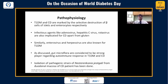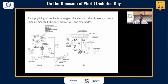Pathophysiologically, in type 1 diabetes and celiac, there is selective destruction of beta cells and enterocytes respectively. Infectious agents like adenovirus, hepatitis C, and rotavirus have also been implicated for celiac, apart from the commonly implicated culprit, gluten. Similarly, enterovirus and herpesvirus are also known triggers for type 1 diabetes. We have already talked about gut microflora, and isolation of pathogenic strains from duodenal mucosa of celiacs has also been demonstrated. This is a summary of the various postulated mechanisms in the pathway of commonality of destruction of both beta cells and enterocytes.